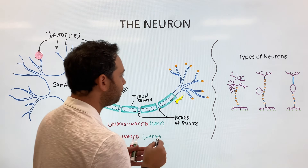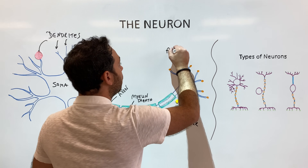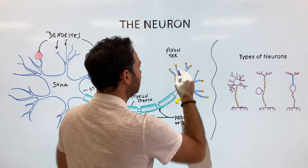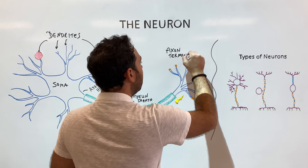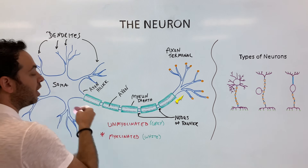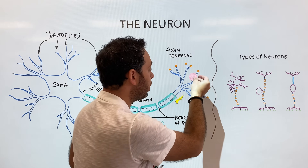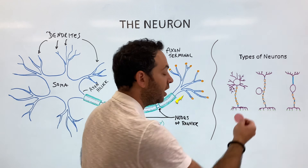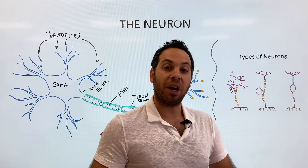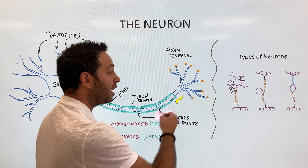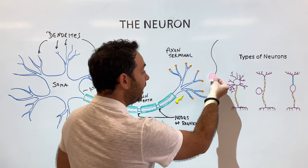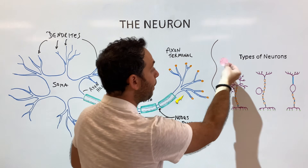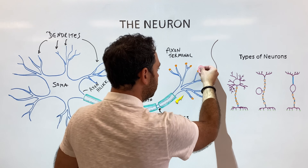At the end of the axon are the axon terminals, also called synaptic buttons. This is where neurotransmitters are stored in synaptic vesicles. Once the action potential reaches the axon terminal, those neurotransmitters are released and bind to receptors of the next postsynaptic neuron. Two neurons don't actually touch each other — the neurotransmitters are released into a small gap called the synapse, the junction between two neurons.